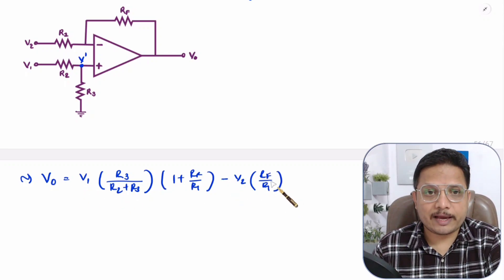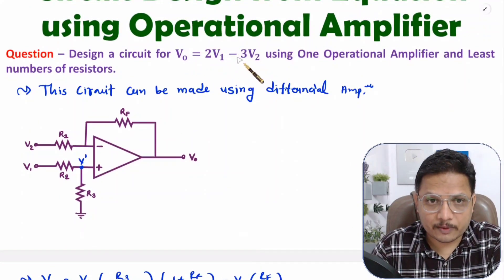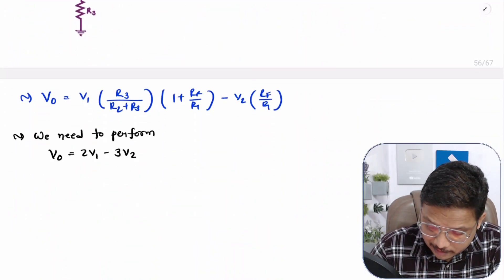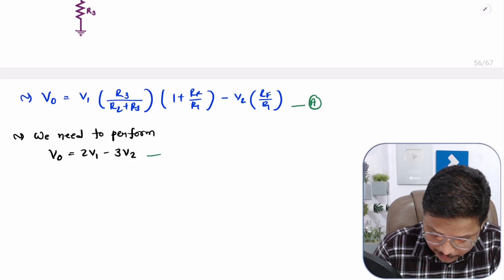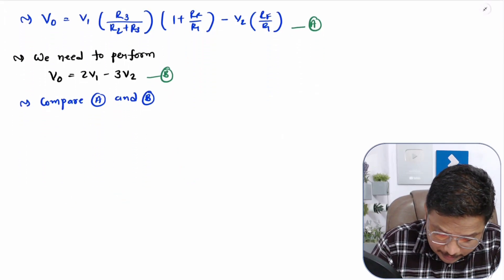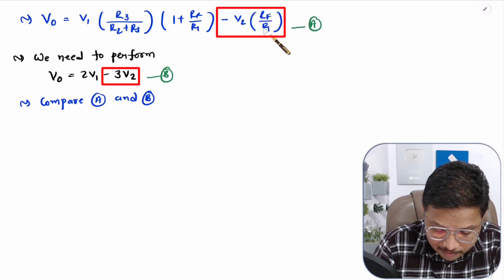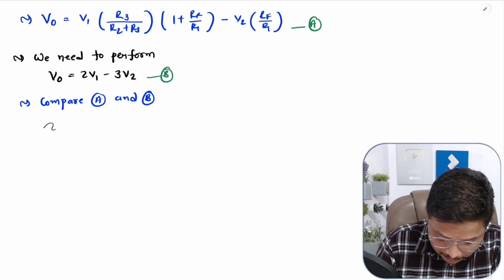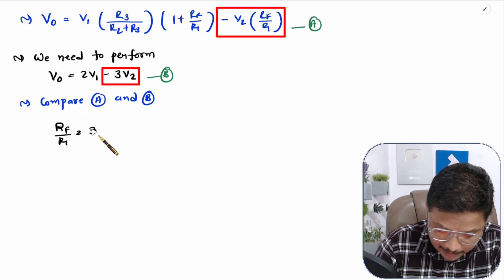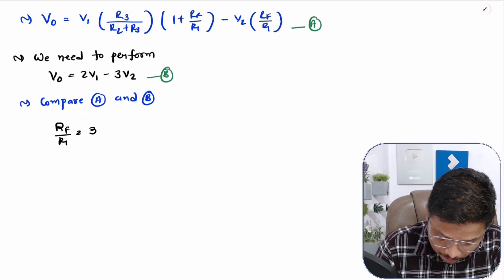So that is the basic equation we have. Now what we need to do is compare this equation with the V0 equation. Let us call this equation A and this equation B. If you compare A and B, with V2 the coefficient is minus 3, and here with V2 the coefficient is minus RF by R1. Based on that, one can say RF by R1 equals 3, since V2 is having coefficient minus RF by R1 here and minus 3 there.